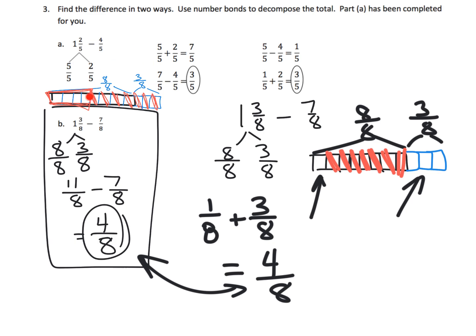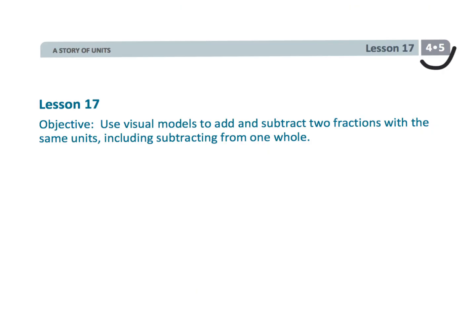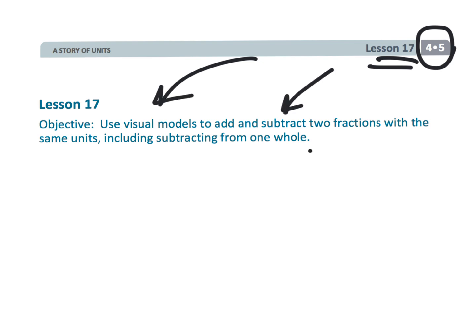Parents and teachers: at this point our students have a choice. We want them to understand both methods, and ultimately they can choose whichever is more comfortable, because both closely align to the standard algorithm they will be learning. We want students to understand both, but it's understandable if they have a preference. That wraps up fourth grade, module 5, lesson 17 — using visual models to focus on subtracting, in particular from one whole.